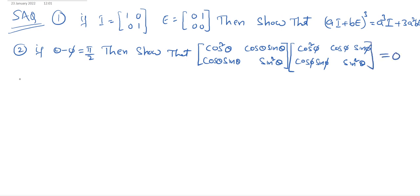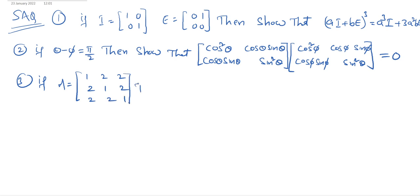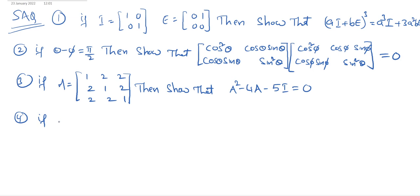Third question: if capital A is equal to the 3×3 matrix [1, 2, 2; 2, 1, 2; 2, 2, 1], then show that A² − 4A − 5I = 0.